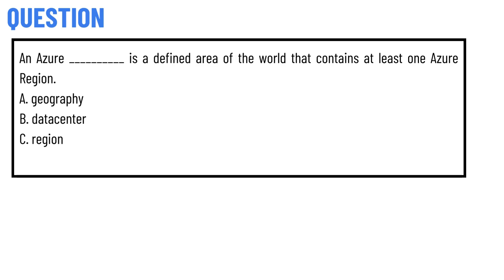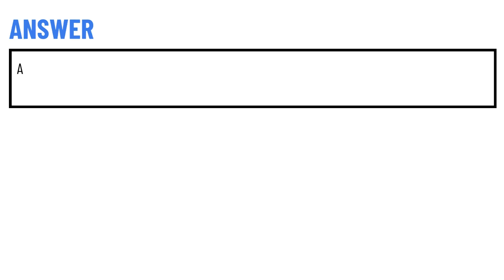Today's question is: an Azure defined area of the world that contains at least one Azure region. Option A: Geography. Option B: Data Center. Option C: Region. The correct answer is Option A.